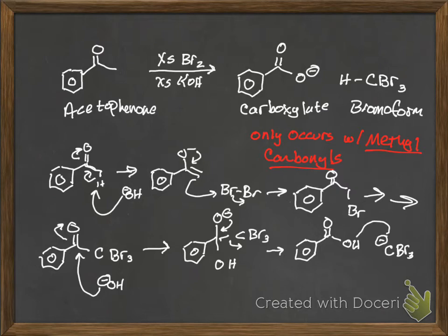Finally, we deprotonate. The anion is not that stable. It pulls the proton off of the carboxylic acid. And what we get is this: the carboxylate salt and bromoform.